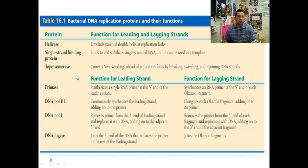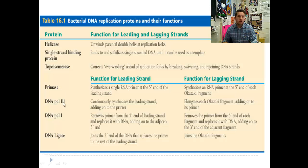Here are the enzymes we need to keep in mind. Helicase does the unwinding, stabilized by the single-strand binding protein. Topoisomerase corrects any overwinding that happens from helicase. Then for the actual replication process: primase, DNA polymerase 3, DNA polymerase 1, and ligase. We'll go through these one at a time as we go through the process.